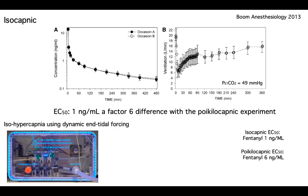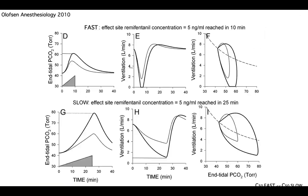There's a big difference between poikilocapnic and isocapnic conditions, and when you perform poikilocapnic experiments, the endpoint — the result of the study — is context-sensitive. One of the most important things is that it becomes dependent on your experimental conditions. For instance, how speedily you inject the opioids — whether you give it slowly or quickly — matters a great deal.